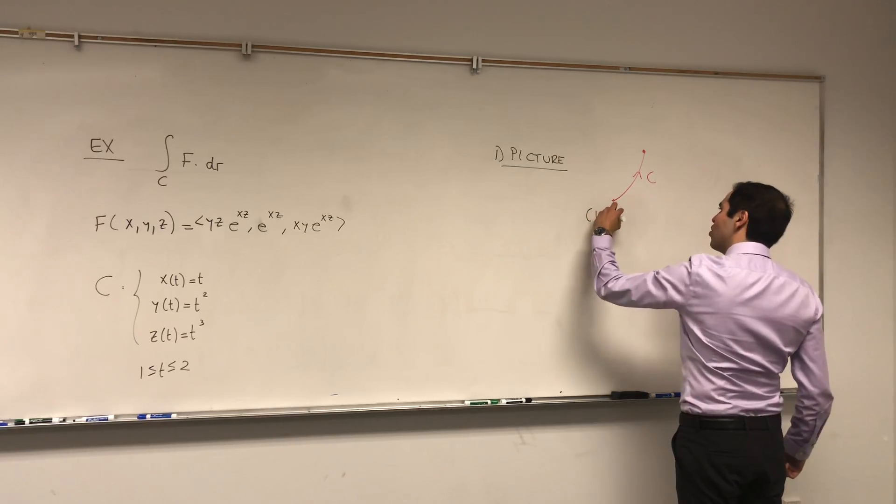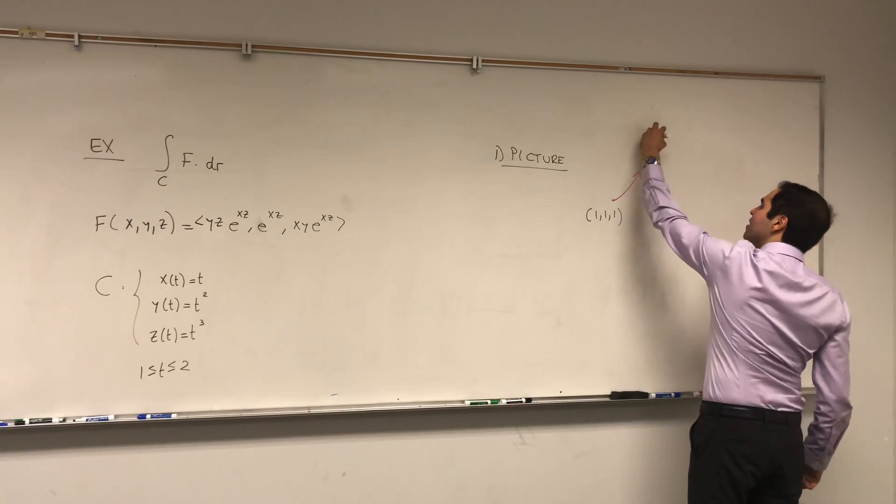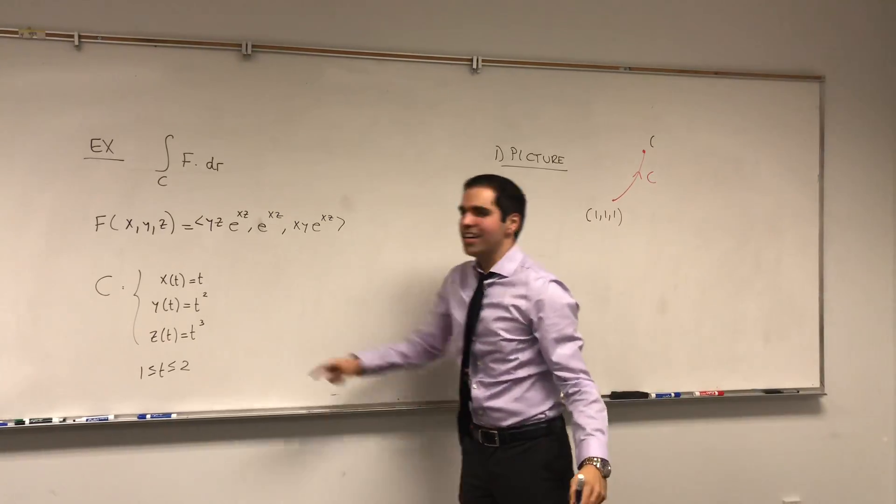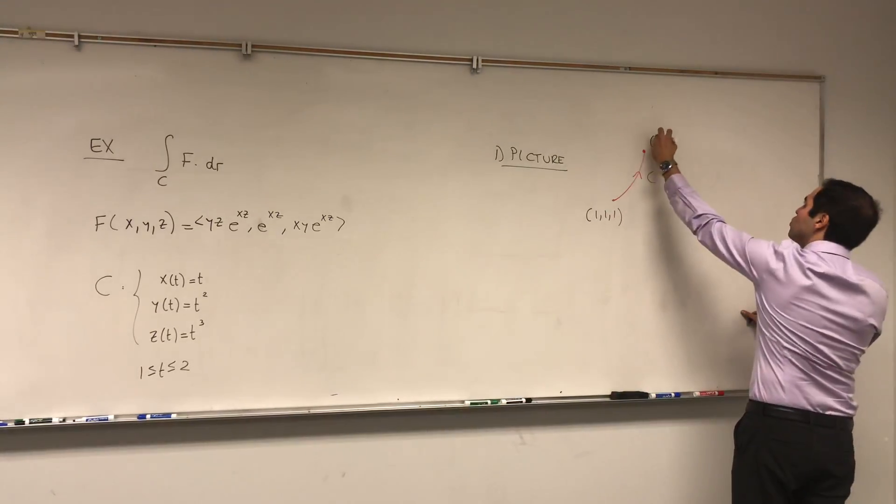We just need to figure out what the starting point is and the ending point is. Well, the starting point is 1, 1, 1, and the ending point becomes 2, 2 squared, and 2 cubed, which is 2, 4, 8.